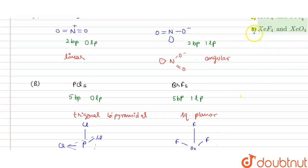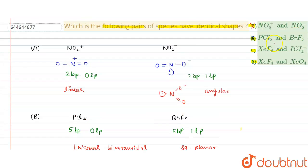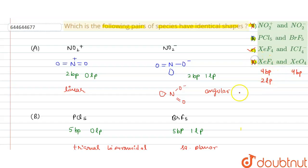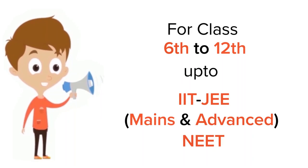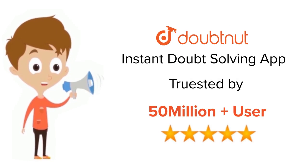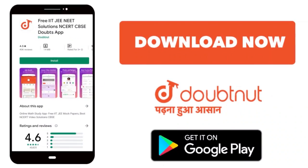Option D is wrong because one species has four bond pairs and two lone pairs while the other has four bond pairs and zero lone pairs, so the geometry is not the same. For class 6–12, IIT-JEE and NEET level, trusted by more than 5 crore students — download Doubtnut today.